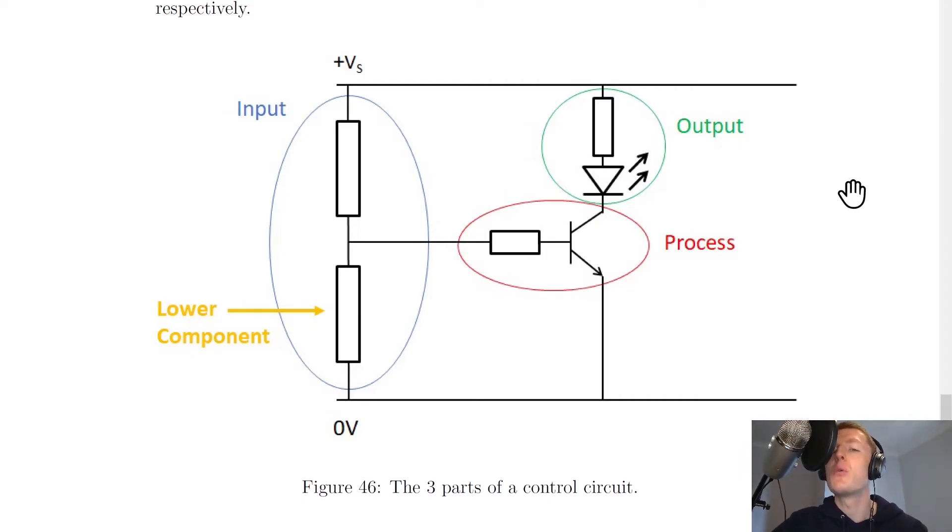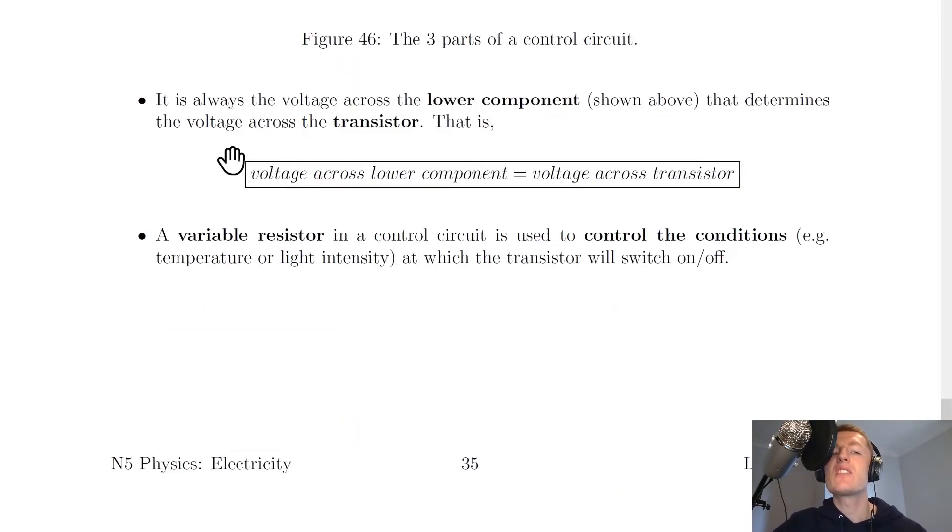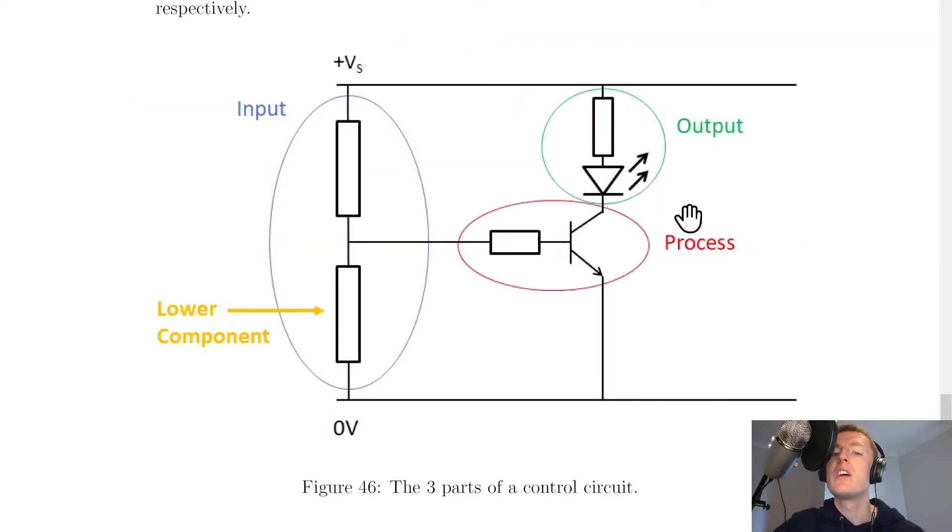Next, it says here that it is always the voltage across the lower component that determines the voltage across the transistor. That is, the voltage across the lower component is equal to the voltage across the transistor. If we look at the diagram, you'll see I've labeled the lower component because this is the one that tells us what the voltage across the transistor is, and therefore if the transistor is going to be switching on or off, and therefore if the output device is going to switch on or off as well. A key rule to remember for switching circuits or control circuits is that the voltage across this lower component is equal to the voltage across the transistor.